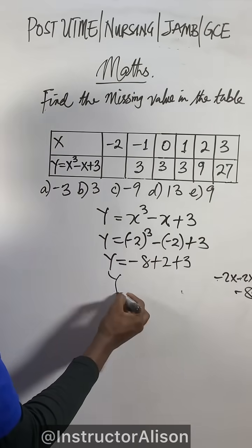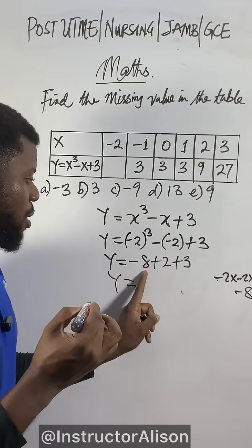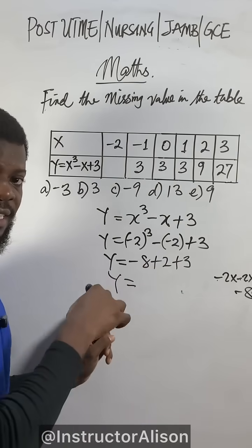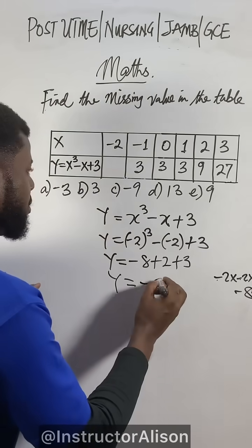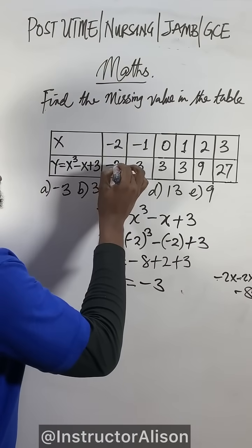So now we'll be equal to -8 + 2 gives us -6, and -6 + 3 gives us -3. So now -3 is the answer.